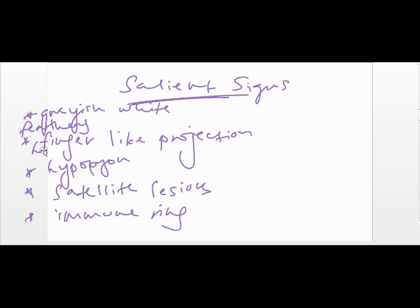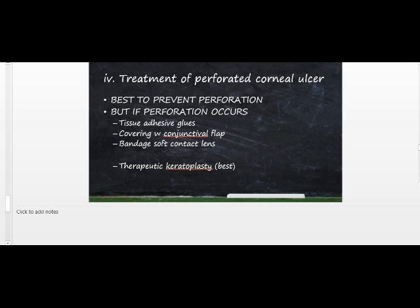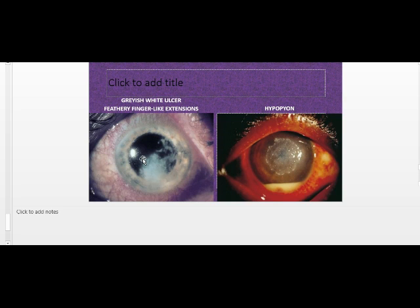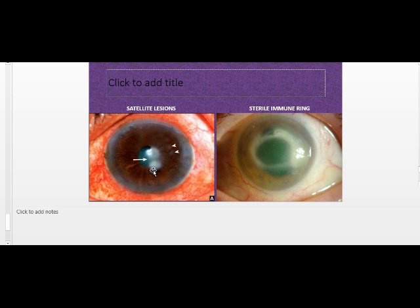How are you going to diagnose it though? Look up all of these pictures on Google. I have them, I will just open it for you. When I make my notes, I actually put pictures into them. So this is the grayish white, feathery finger-like extension. This is the hypopyon. This is the satellite lesions. As you can see, there are two big ones here and two small ones here. And this is the sterile immune ring.